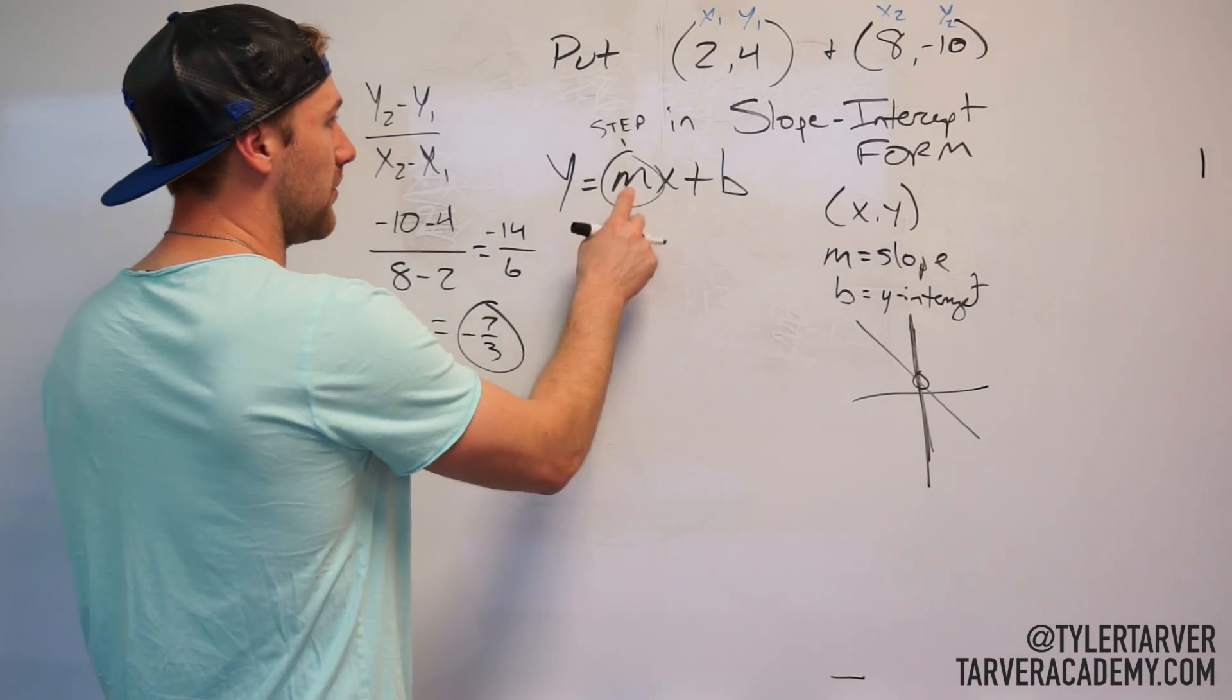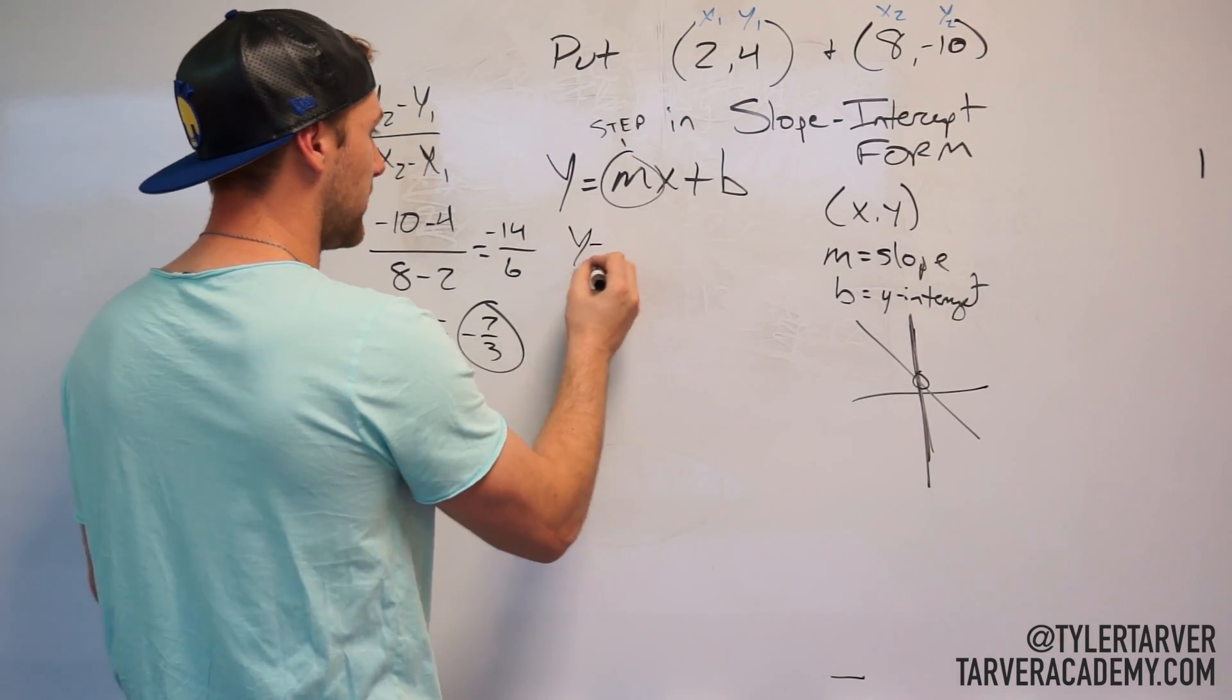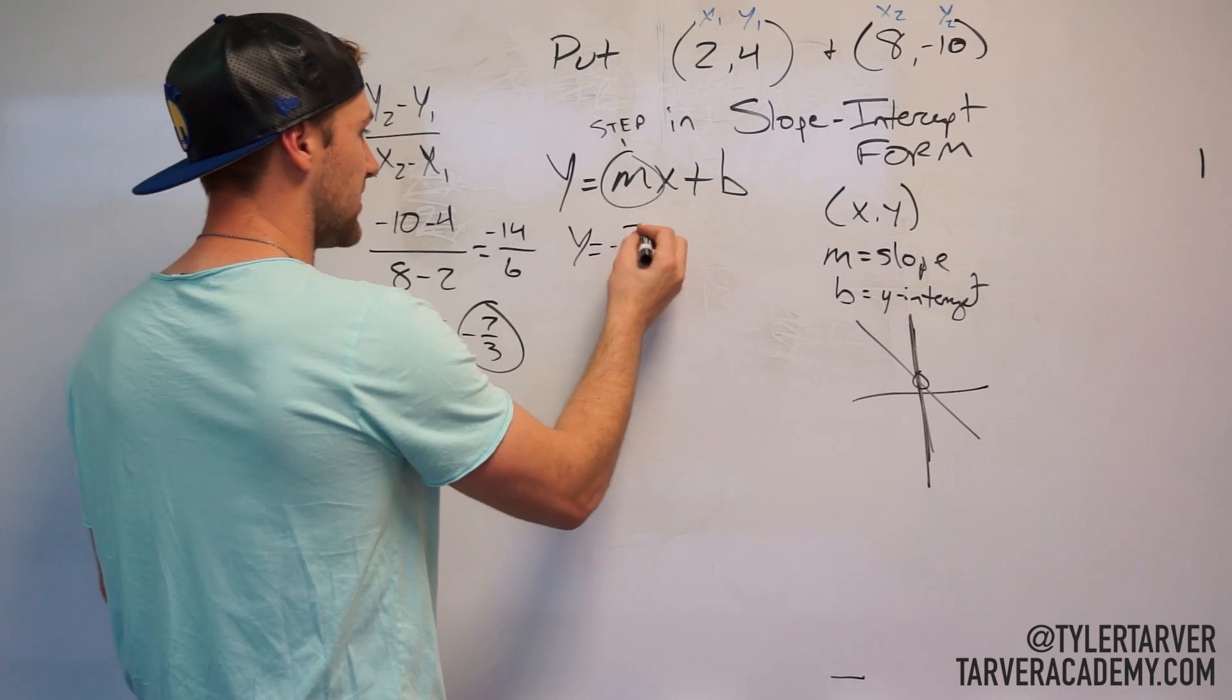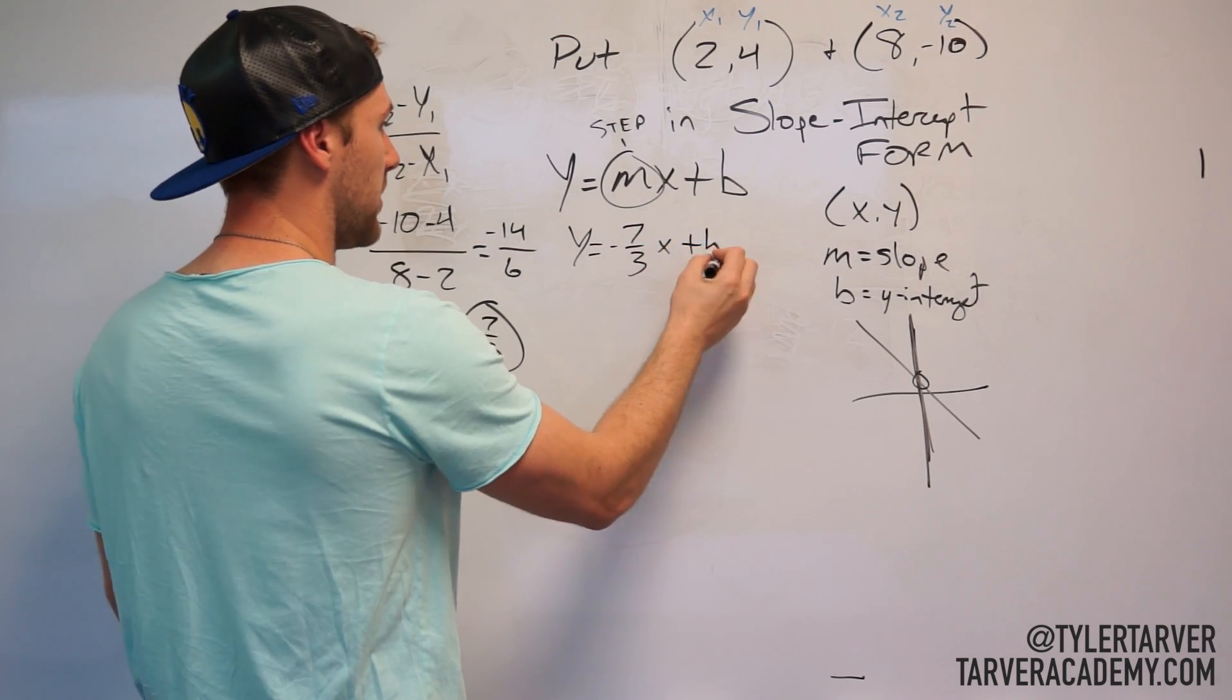Okay, so whenever we're doing that, I've found my step one, my step Curry with a shot, boy. So that's negative 7 over 3, x plus b.